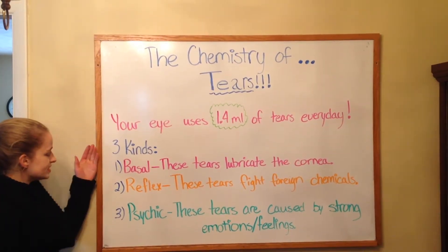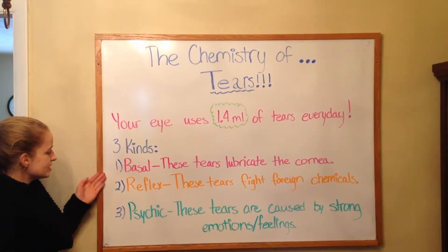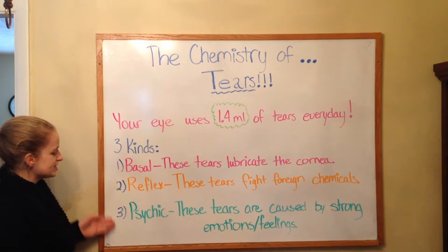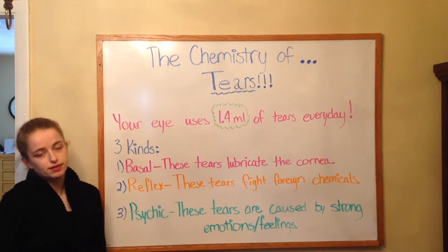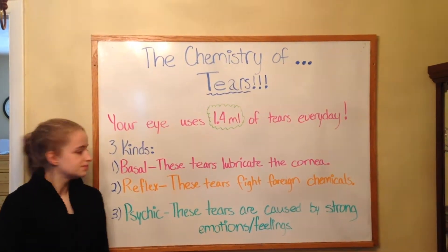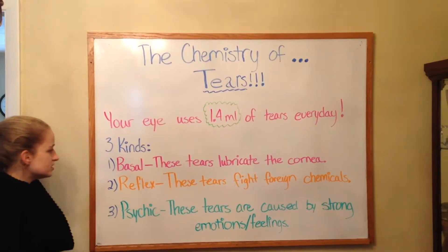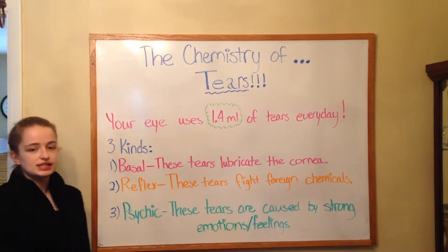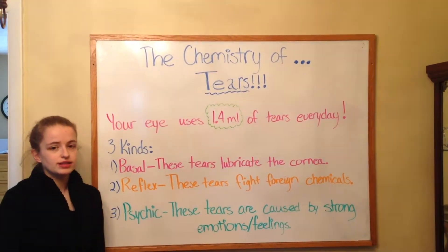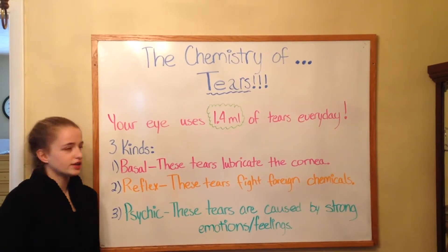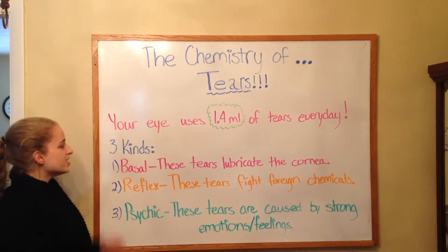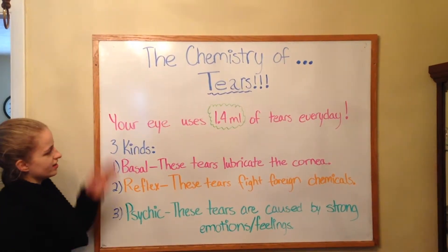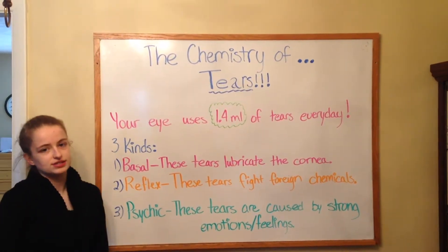There are three kinds of tears: basal tears, reflex tears, and psychic or emotional tears. Basal tears are the kind that lubricate the cornea in your eye, and they're the kind that your eye uses every single day.